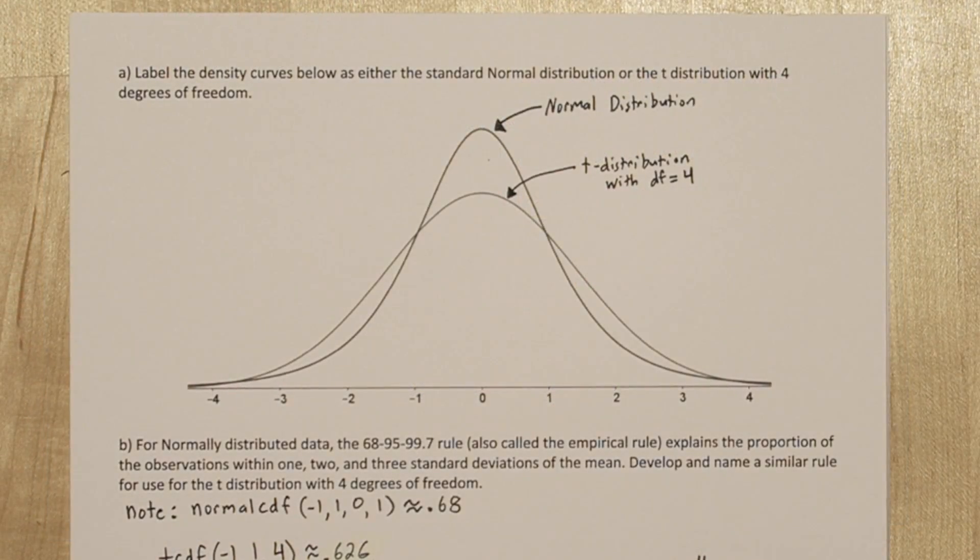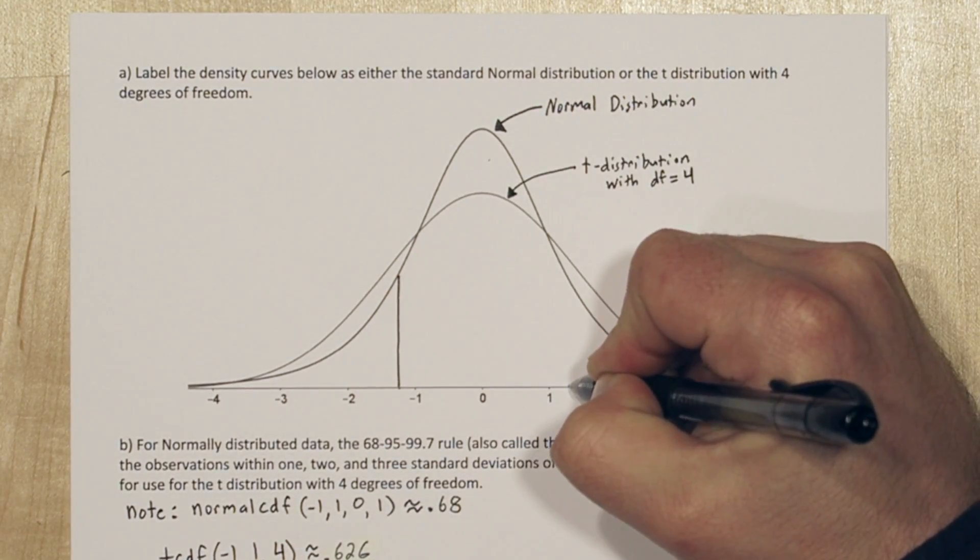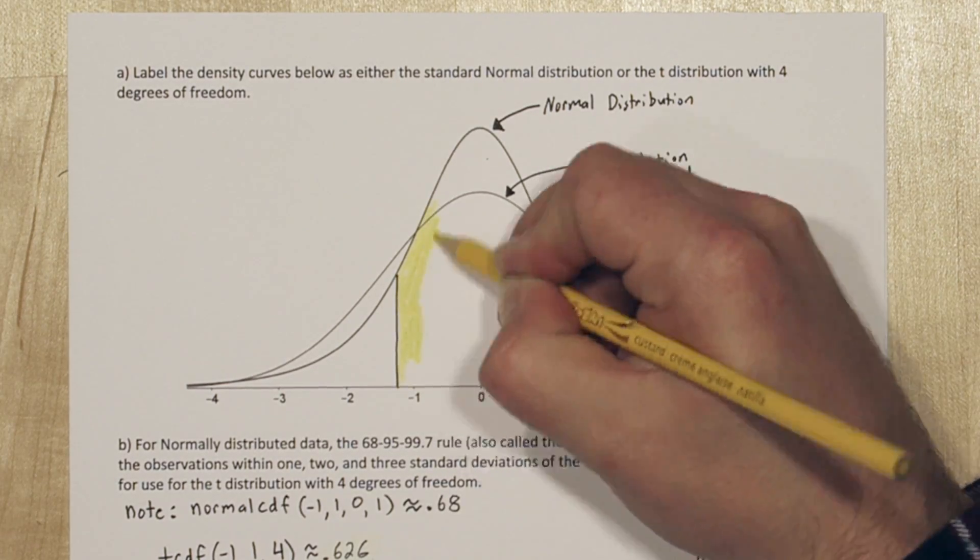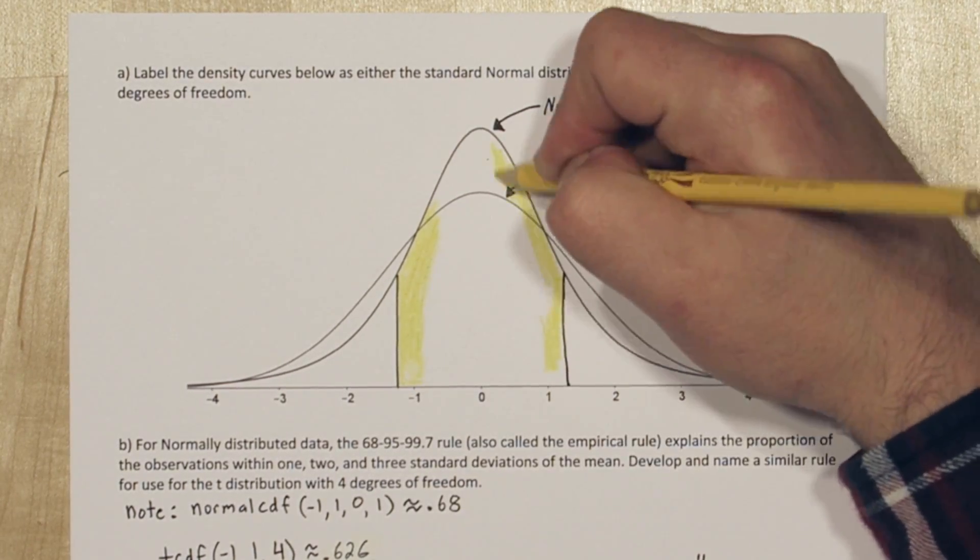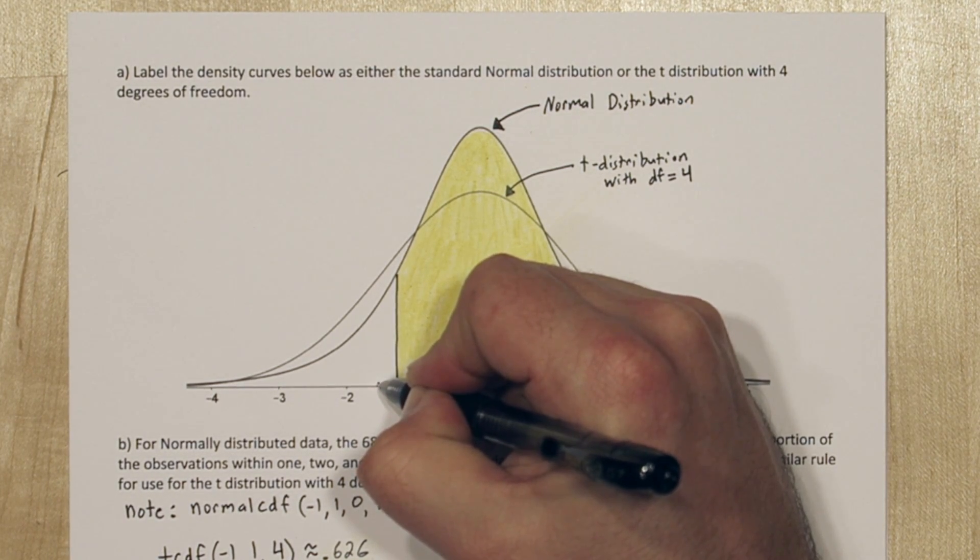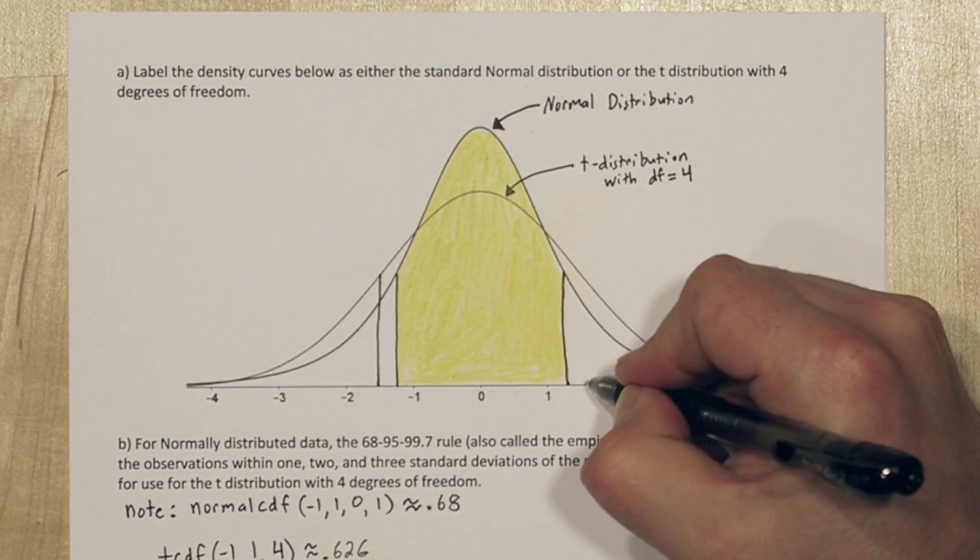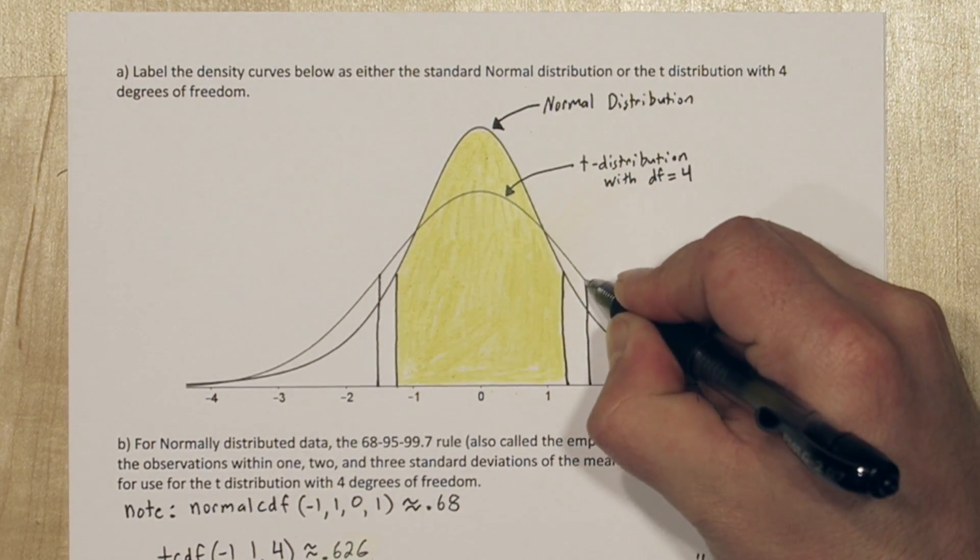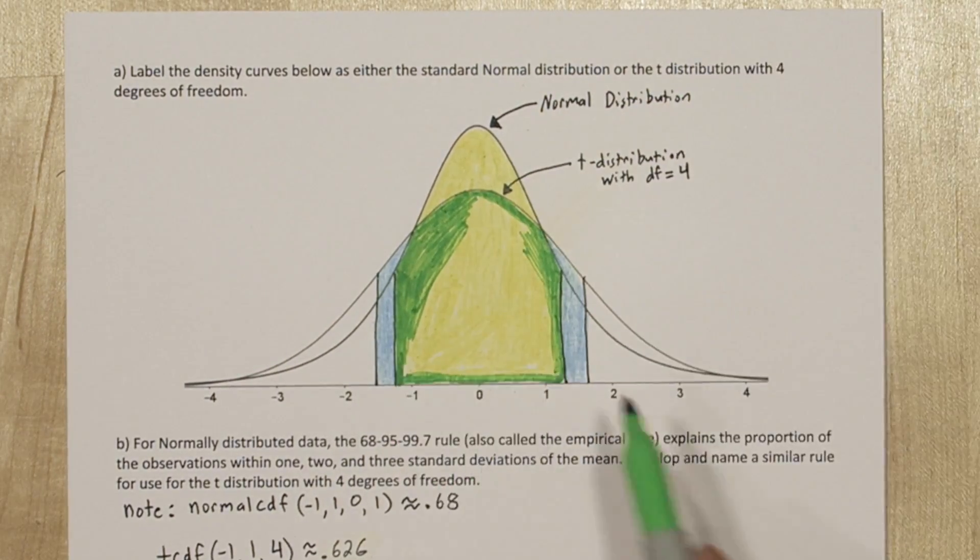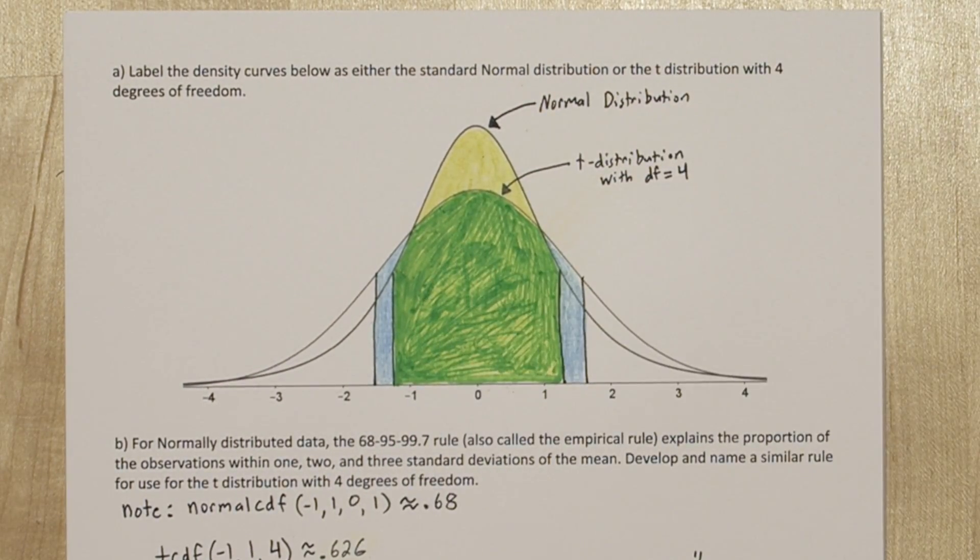For the normal distribution, we had to go 1.28 standard deviations in each direction. So let's draw those cutoffs. And we'll shade the normal distribution yellow. Now for the t distribution, we had to go 1.53 standard deviations from the mean in each direction. Let's shade the t distribution blue. And we'll shade the intersection between the two of them green.